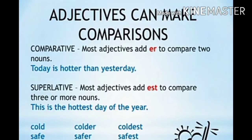Adjectives can make comparisons. Most adjectives add '-er' to compare two nouns. For example: 'Today is hotter than yesterday.' So how did we compare? The present day is hotter than the past day. The word 'hot' has been changed — the suffix added is '-er', making it 'hotter'.